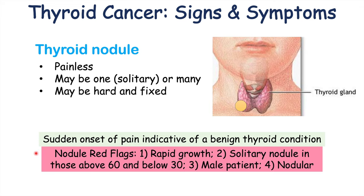There are particular red flags that can be noted with a thyroid nodule. One is rapid growth — if the lump starts growing larger very quickly, that is a troubling sign. The second red flag is a solitary nodule in an individual above the age of 60 or below the age of 30. Another red flag is if the patient is male. The fourth is if the nodule is nodular — if there are other lumps and bumps on the nodule itself, that is a more worrying sign.